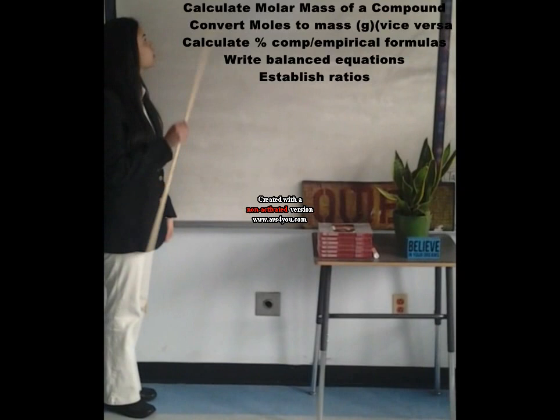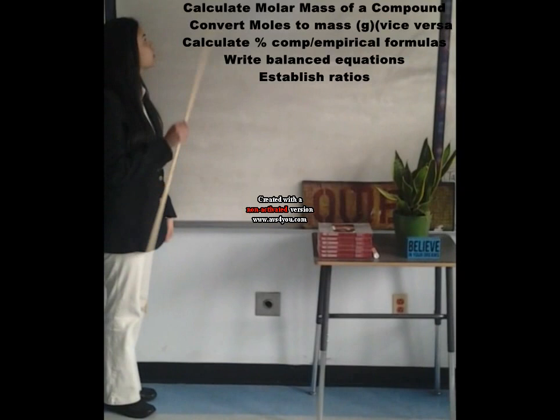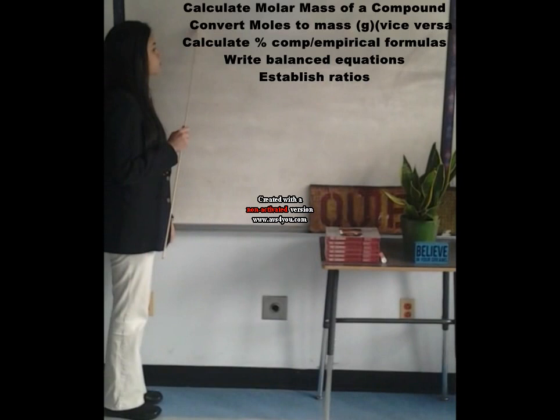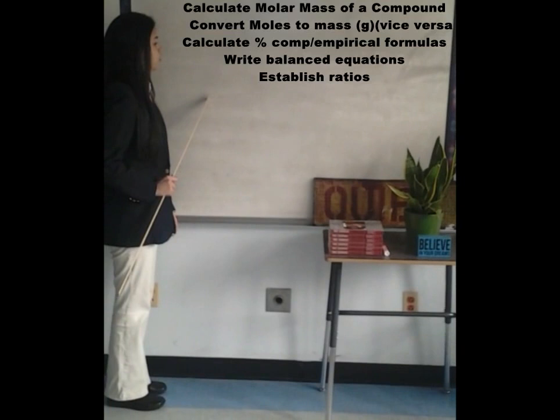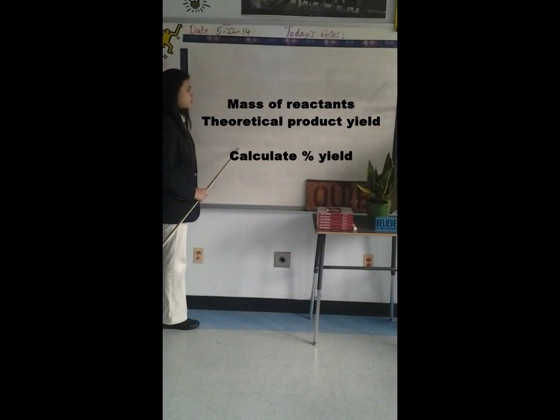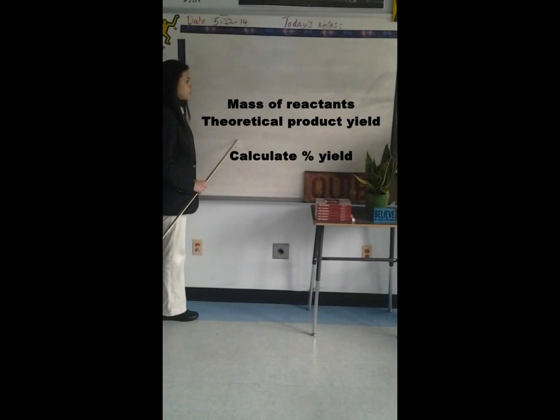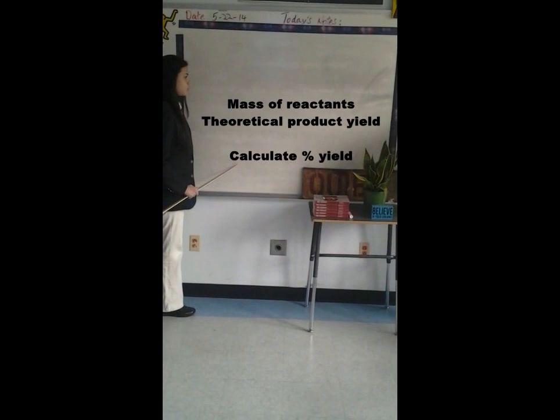In this series, we'll be covering how to calculate molar mass of a compound, calculate moles from grams and vice versa, calculate percent composition in empirical formulas, write balanced equations, use balanced equations to establish ratios between reactants and products, the mass of reactants and theoretical product yield using a balanced chemical equation, and compare theoretical and actual quantity of products to calculate percent yield.